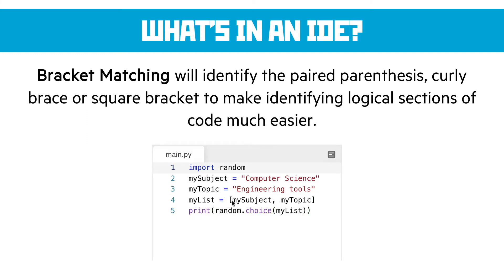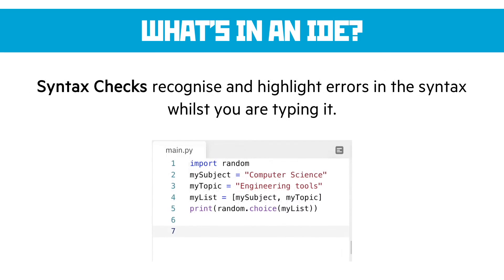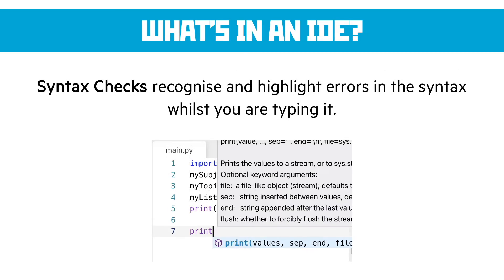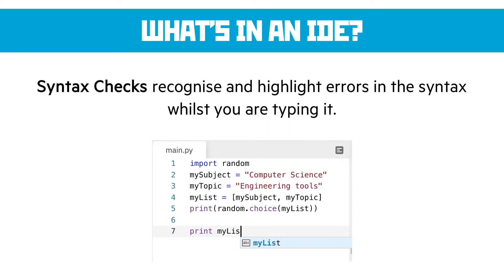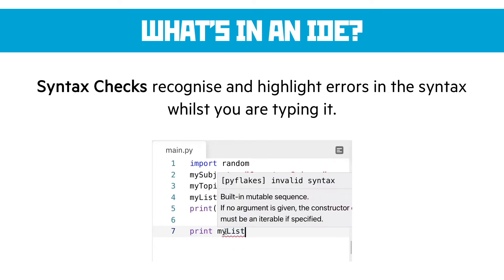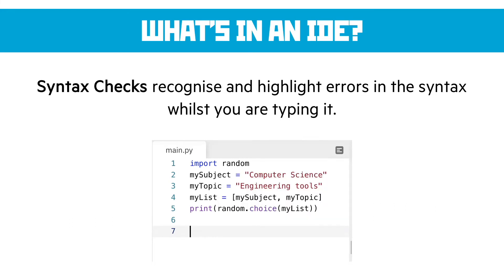That's really useful because identifying logical code snippets and seeing where brackets start and finish makes a big difference to how we code. Syntax checks happen live when you type and underline or show you where there's an error and tell you what that might be before you click the run button. And that saves time in seeing those errors before we click go.